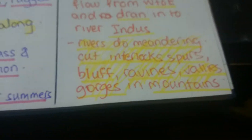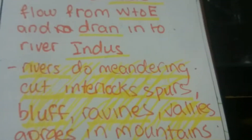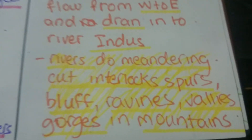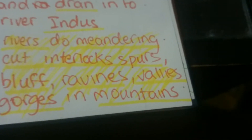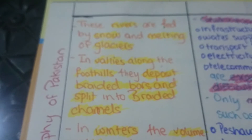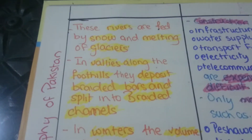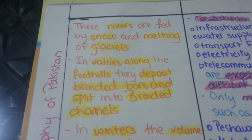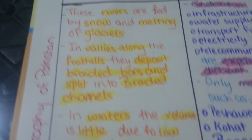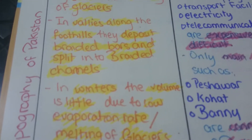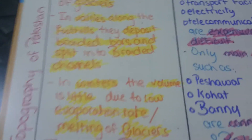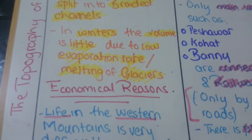Rivers do meandering, cut interlocked spurs, bluffs, ravines, valleys, and gorges in the mountains. These rivers are fed by snow and melting glaciers. In the valleys along the foothills, they deposit braided bars and split into braided channels.